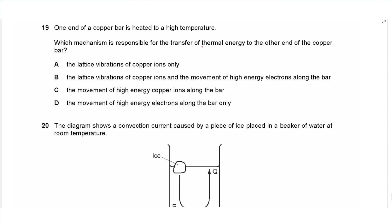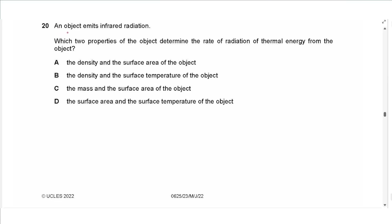Question 19: One end of a copper bar is heated. The mechanism for thermal energy transfer to the other end is lattice vibrations of the copper atoms and the movement of free electrons along the bar. Option C (movement of high-energy copper ions) is wrong because ions do not move in solids. Option D (electrons only) is wrong because lattice vibrations also contribute. The answer is B. Question 20: The rate of infrared radiation from an object depends on its surface area and surface temperature, not density or mass. The answer is D.